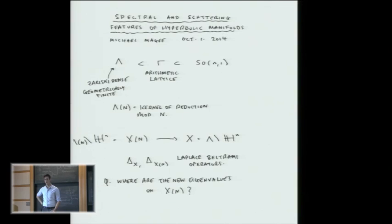It's covered by X of n, and the deck transformation group is lambda mod lambda n. I can consider Laplace Beltrami operators on these two spaces. The thing to notice is that if you have some eigenvalue on X for the Laplacian, and there's some corresponding eigenfunction, this will lift to the covering space. So every eigenvalue that you have downstairs, you'll have it upstairs. So the question is, well, what new stuff is there?